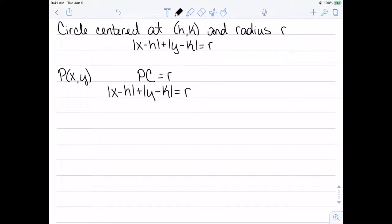Well, by definition of this distance, the distance between p and c would be x minus h absolute value plus absolute value of y minus k, which is equal to r, which does give me this formula for the circle.